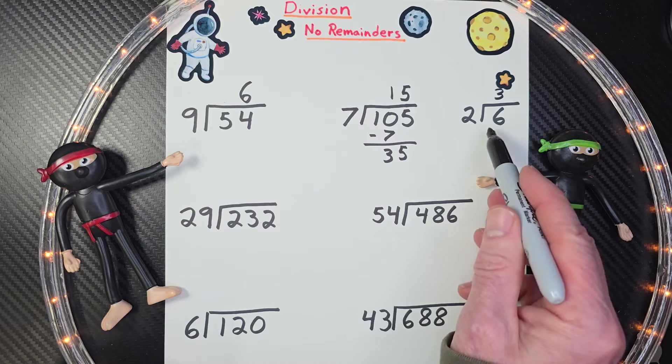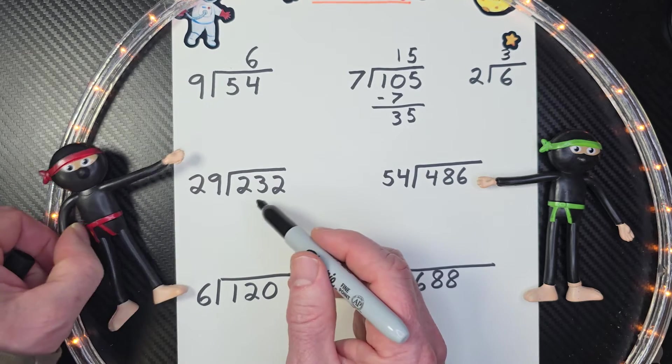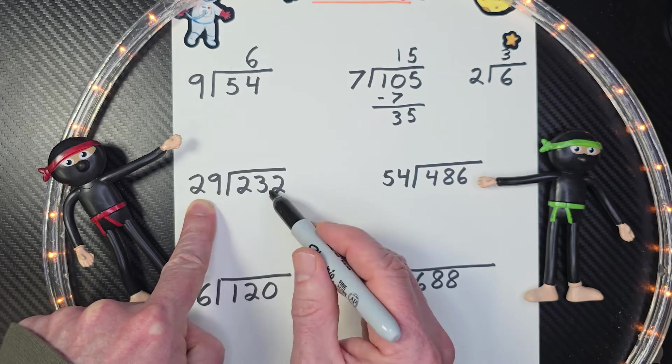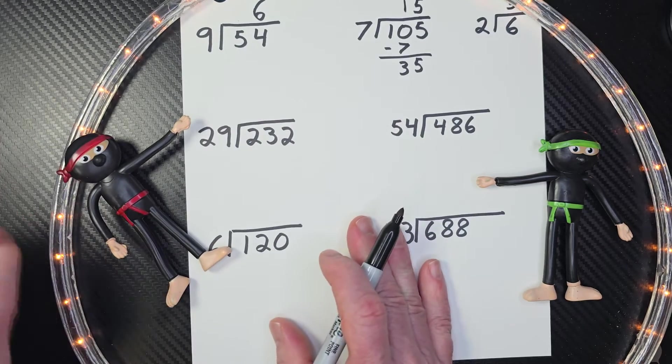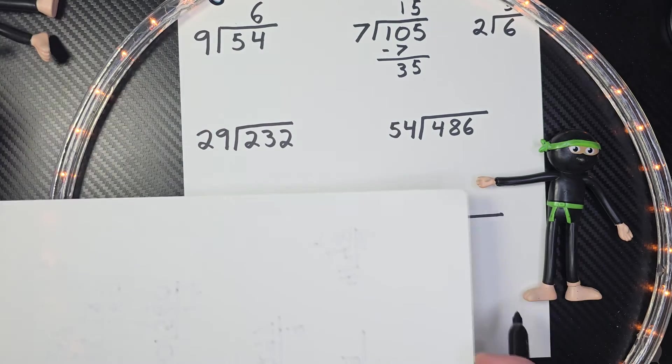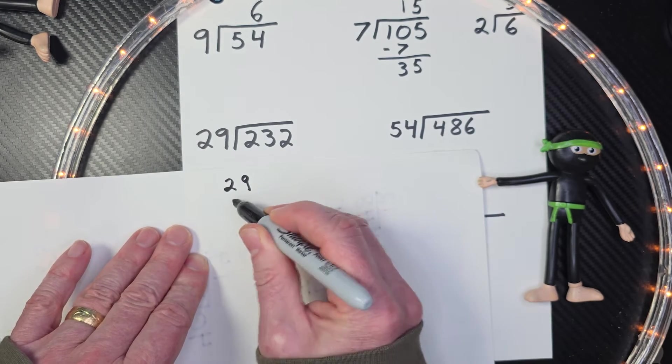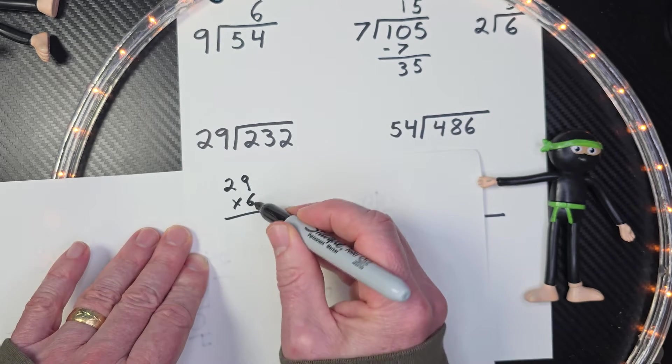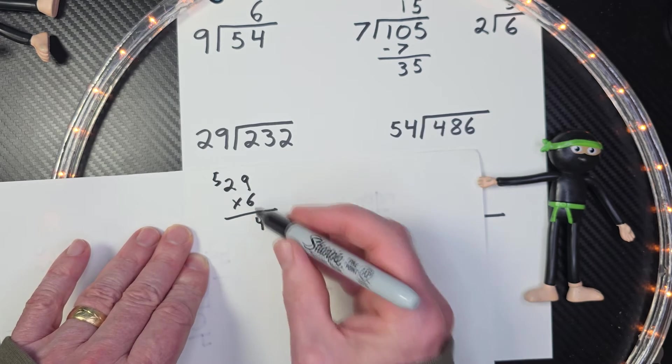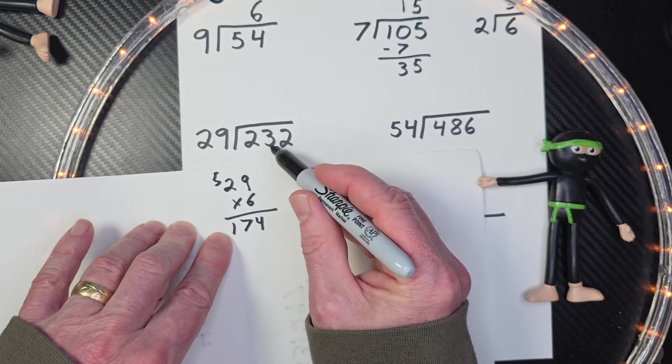Whoa. We went from this problem over to a division problem that has a double digit divisor on it. So I have 232 divided by 29. So how many times got to put 29 into this number right here? So over to the side, what I always like to do is I like to do some calculations. Excuse me, math ninja guy there. And so I'm going to go ahead and do a few problems. I'm going to try six. So nine times six would be 54. And then six times two is 12 plus the five would be the total would be 174. Still too small.